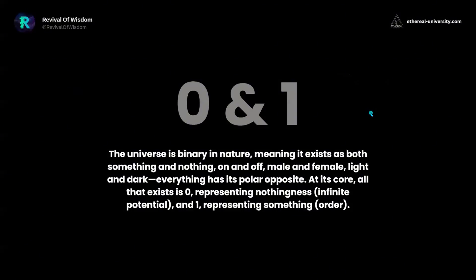This is an important one. We have zero and one. This is the binary code of the universe. It underlies everything. It is the source of all creation. The universe is binary in nature, meaning it exists as both something and nothing, on and off, male and female, light and dark.